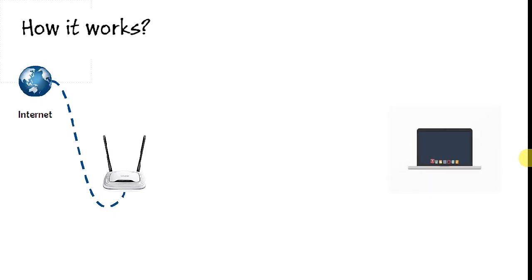So how it works? Let's see with an example. There is a router connected to the internet through any wired technology. There is a client that wants to connect to the router in order to get internet access.